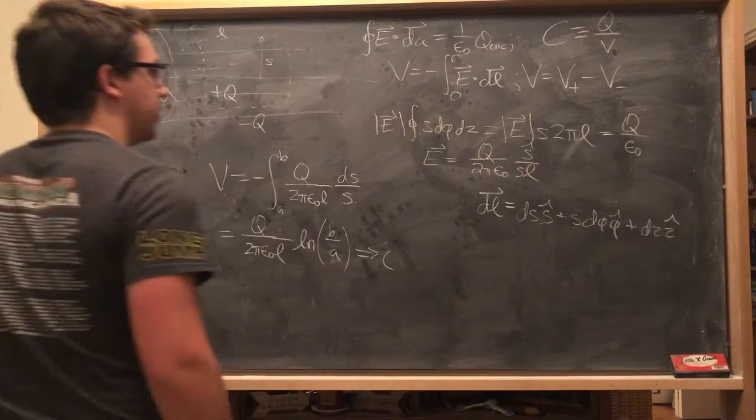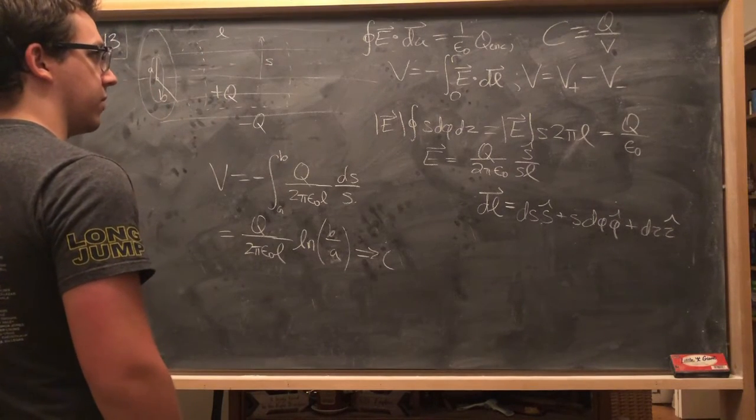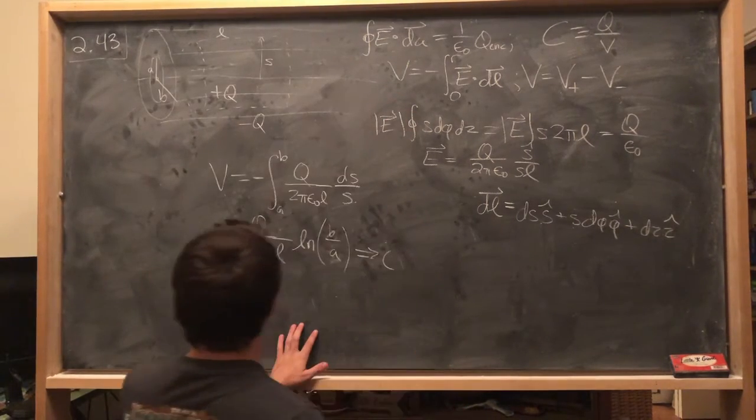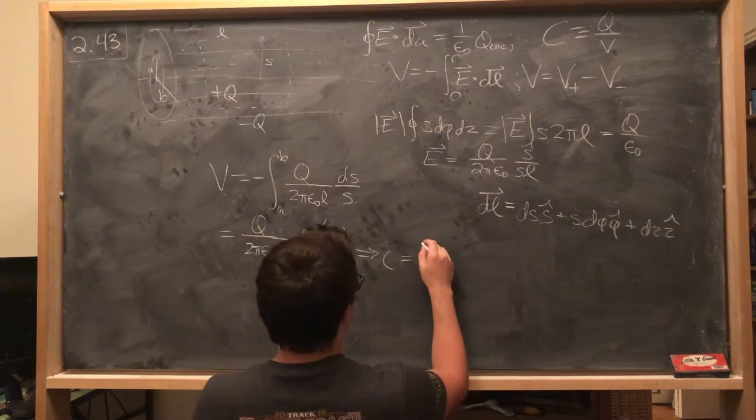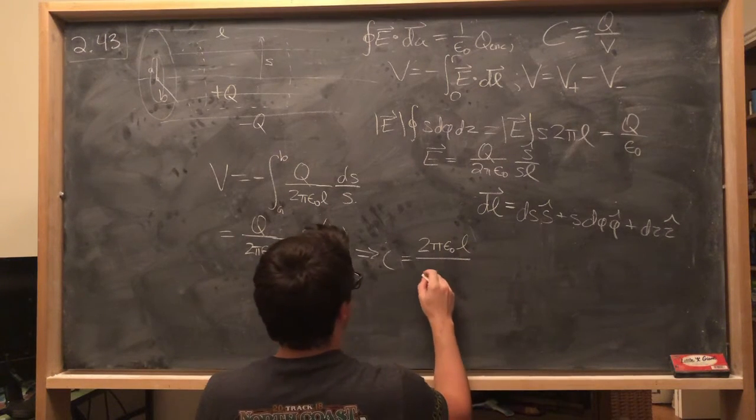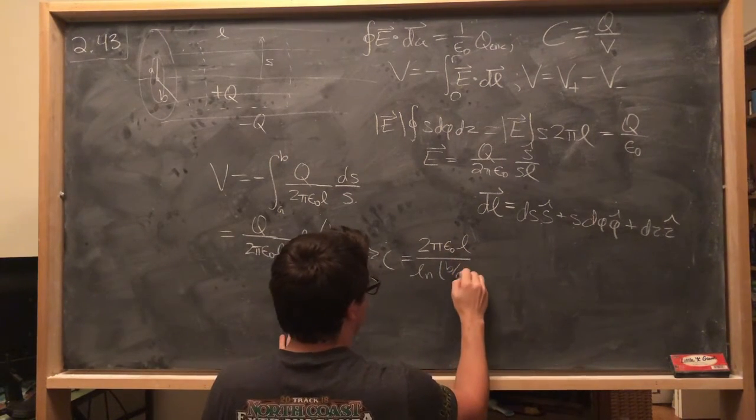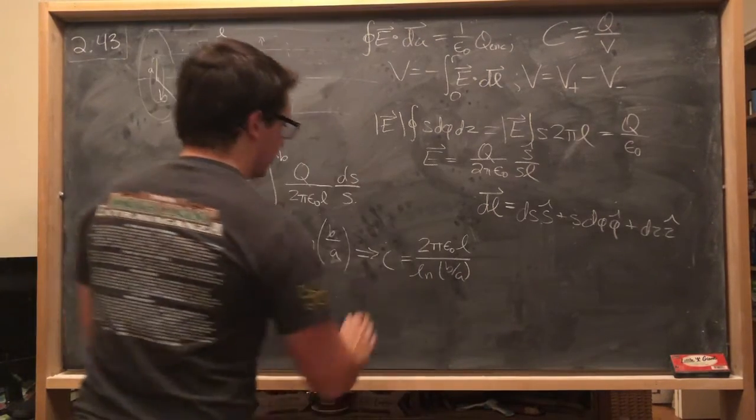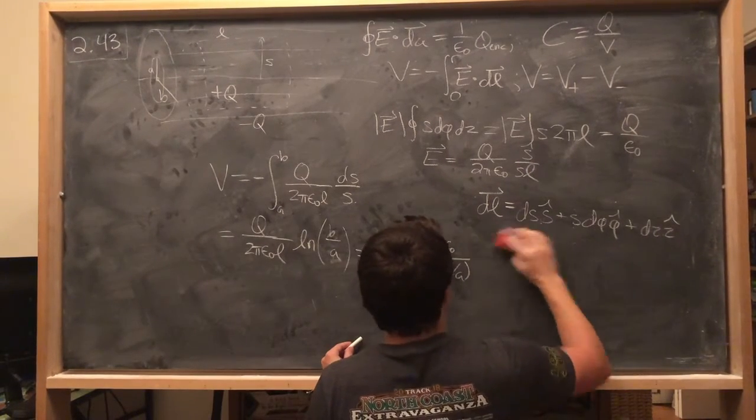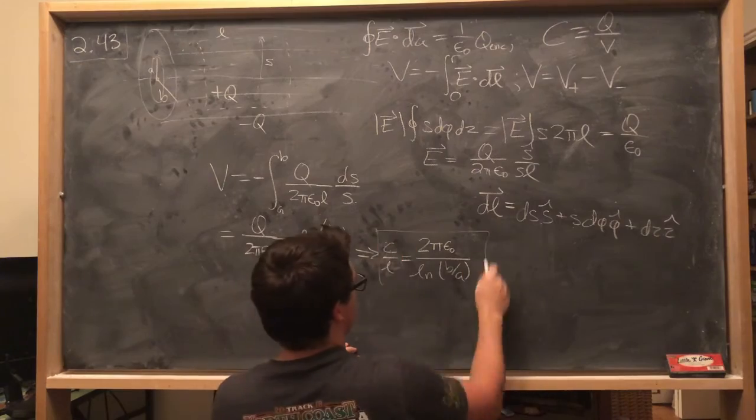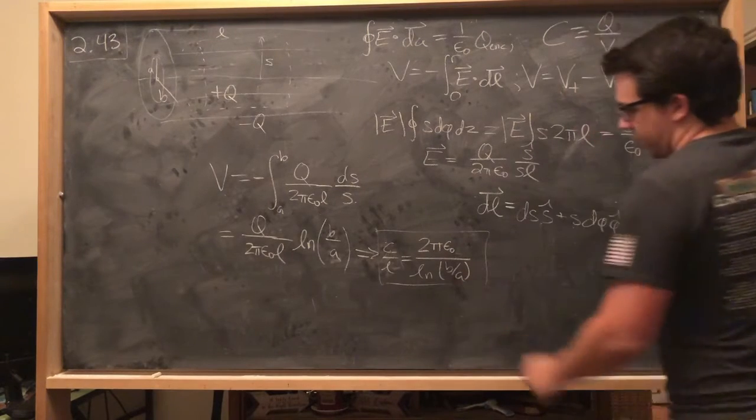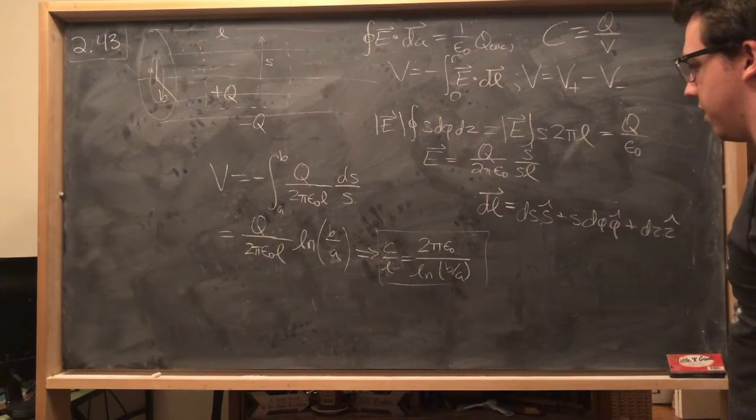And so then, finally, our C is just the charge divided by the potential difference. And so then what we'll get is we get 2 pi epsilon naught L over ln of B over A. And then what we say is that our capacitance per unit length is 2 pi epsilon naught over the natural log of B over A.